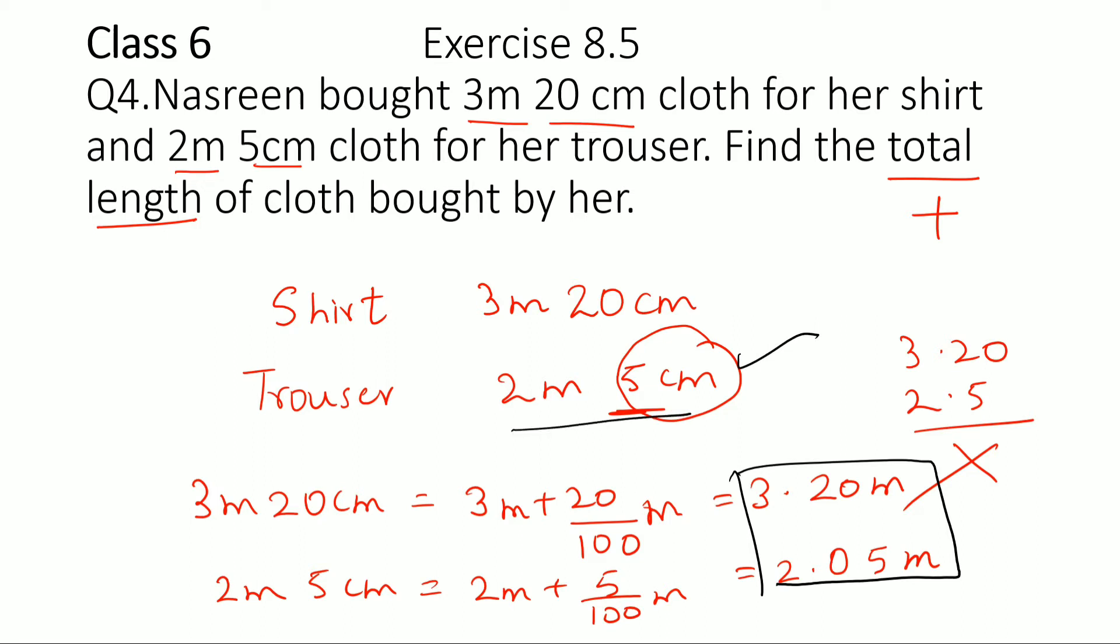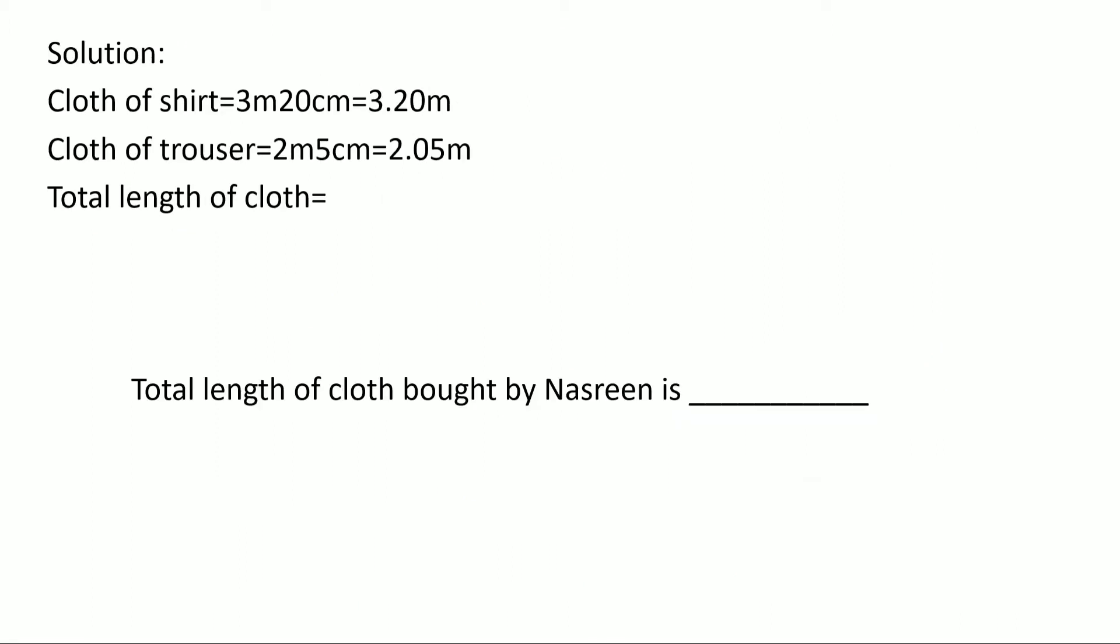Okay, now let us write the statements. Cloth of shirt is 3 meter 20 centimeter, which is 3.20 meter. Cloth of trouser is 2 meter 5 centimeter, which is 2.05 meter. So the total length would be 3.20 meter plus 2.05 meter.